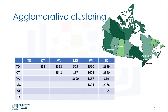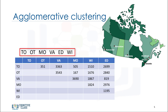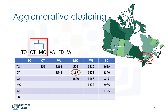The algorithm is started by assigning each city to its own cluster. So if we have six cities, we have six clusters, each containing just one city. Let's note each city by showing the first two characters of its name. The first step is to determine which cities — let's call them clusters from now on — to merge into a cluster. Usually, we want to take the two closest clusters according to the chosen distance. Looking at the distance matrix, Montreal and Ottawa are the closest clusters, so we make a cluster out of them.